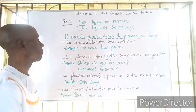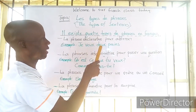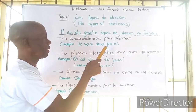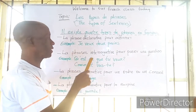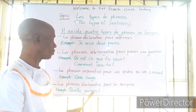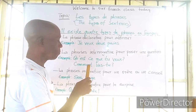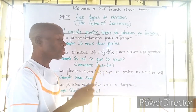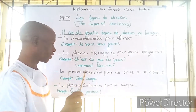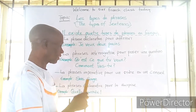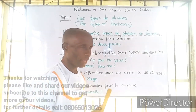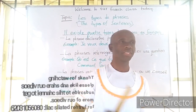Please take it one more time because of our time. La phrase déclarative pour affirmer — 'Je veux deux pains.' La phrase interrogative pour poser une question — 'Qu'est-ce que tu veux? Comment vas-tu?' La phrase impérative pour un ordre ou un conseil — 'Sois sage.' La phrase exclamative pour la surprise — 'Quelle journée!' And with this, dear viewers, we're bringing our class today to an end.